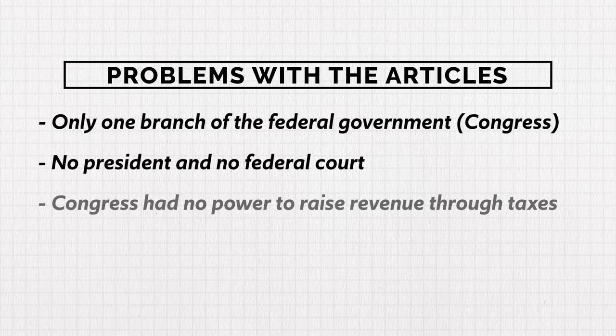First, there was only one branch of the federal government — Congress. There was no president, no federal court, and Congress had no power to raise revenue through taxes. If they wanted money to fund their activities, they just had to ask the states nicely. Additionally, Congress had no power to raise an army, and even if they did, they had no money to pay one.